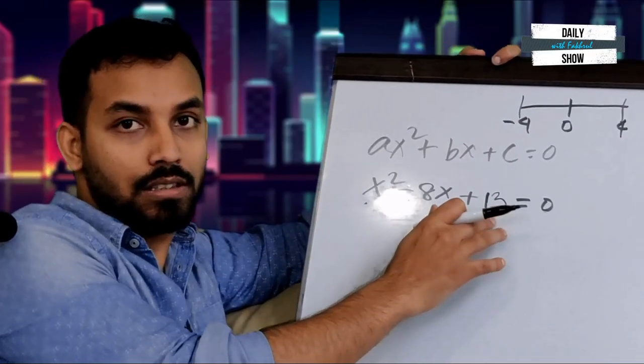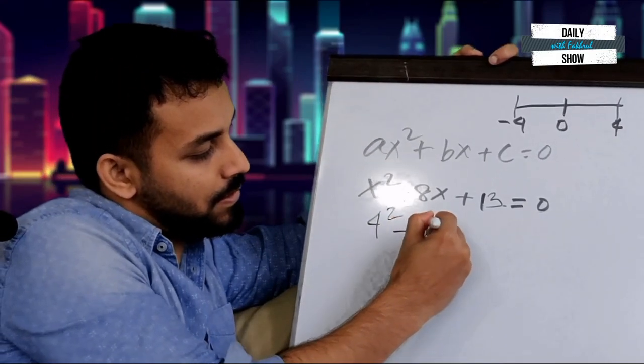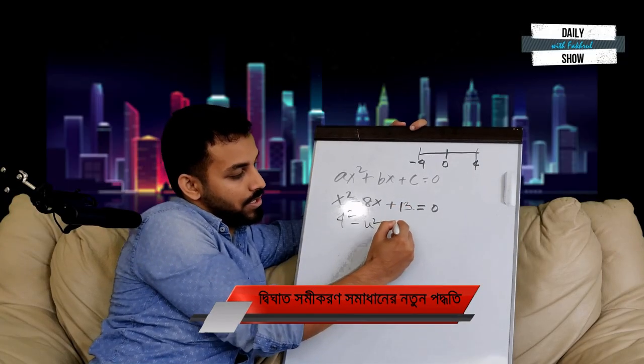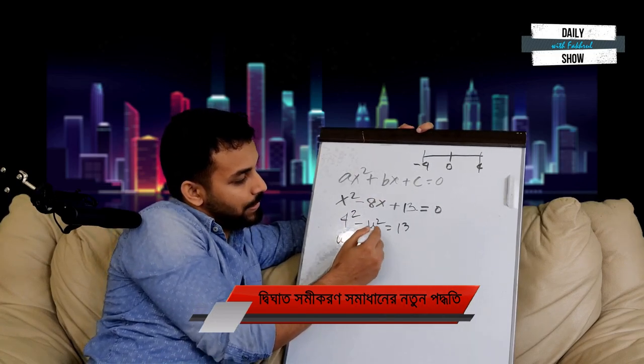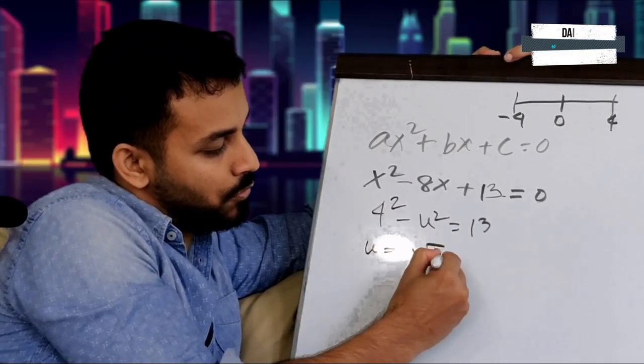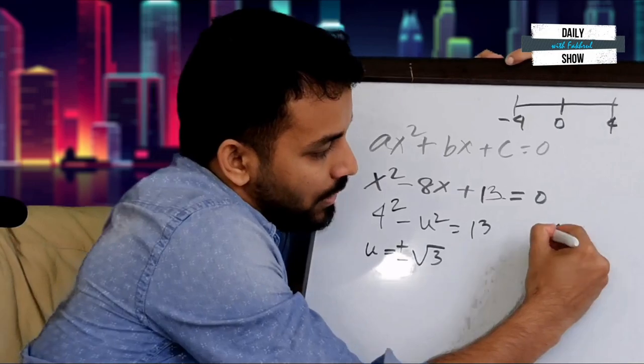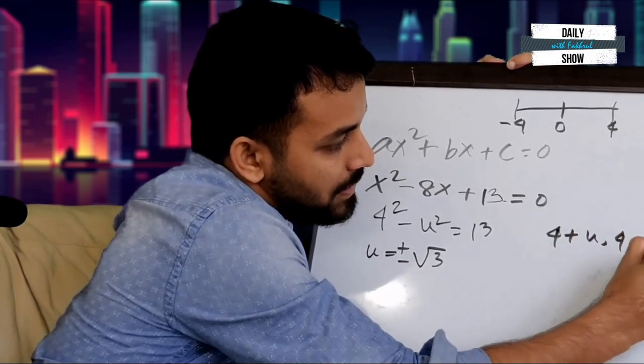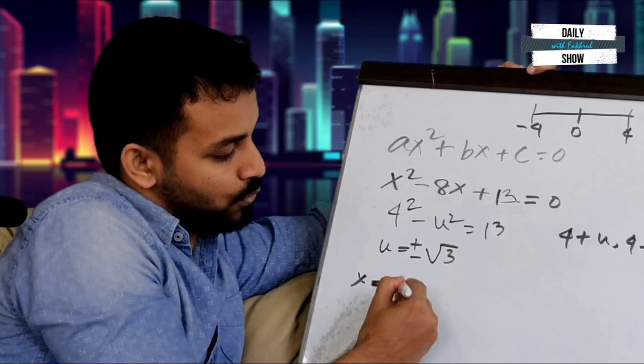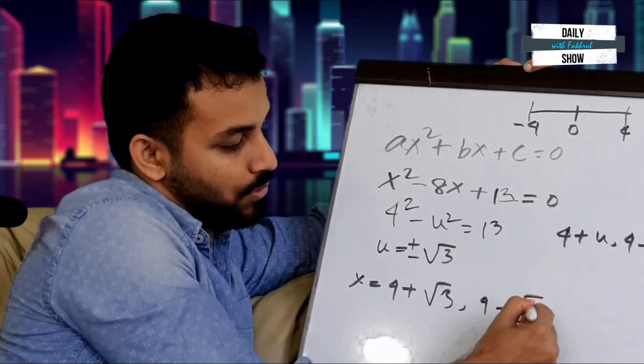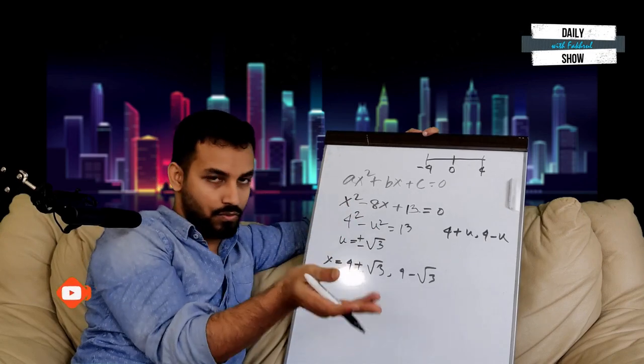Now if we change it to 4 squared minus u squared equals 13, we get u equals plus minus root of 3. So we have complex solutions: for u equals plus root 3, x equals 4 plus root 3, and for u equals minus root 3, x equals 4 minus root 3.